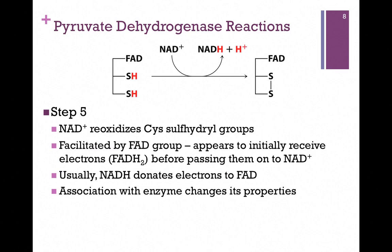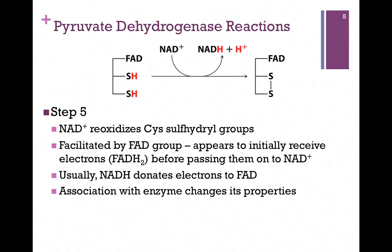We have to return E3 to its original form as well, so we're going to re-oxidize those sulfhydryl groups and reform the disulfide bond. As we do that, we extract those electrons and pass them eventually to NAD+ to form NADH. The FAD cofactor of E3 participates in this process — it probably receives the electrons first before passing them to NAD+. If these were separate cofactors not associated with proteins, the process would usually be the reverse — electron flow would normally go from NADH to FAD. But the fact that FAD is associated with a protein makes this possible. This will make more sense when we get to Chapter 15 and look at the flow of electrons.